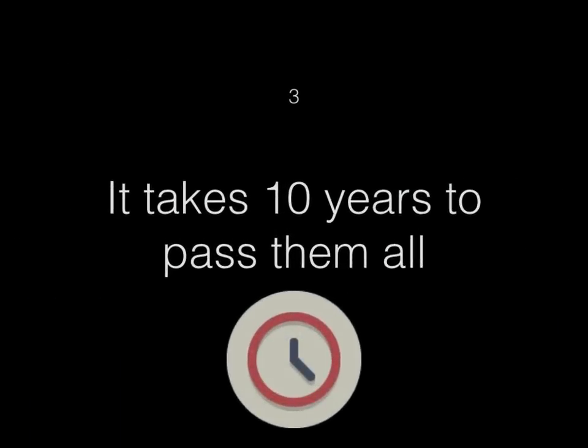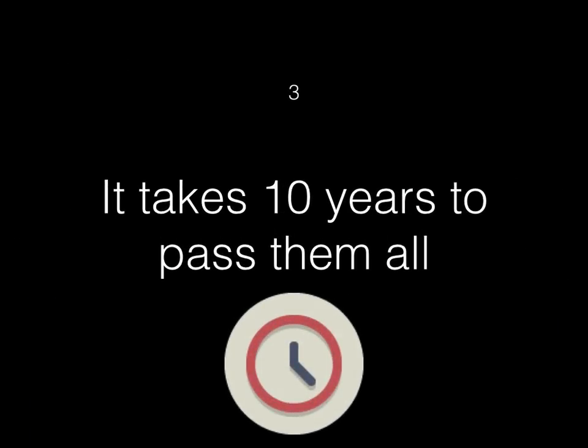The next myth is that it takes up to 10 years to pass all these exams. And while it's true that there are a lot of exams to be written, it doesn't actually take that long. I know people who have passed all the exams within five years. And how it works is you do your university degree, you'll get a few exemptions if you're doing an actuarial science course. Then there are three years that you need work-based experience in order to become a fellow actuary.